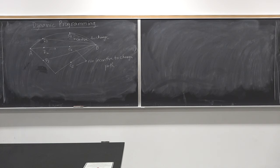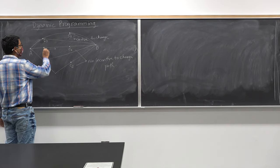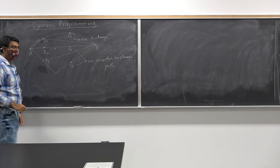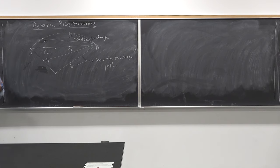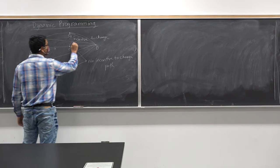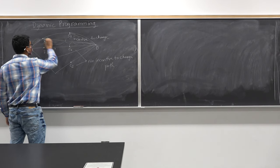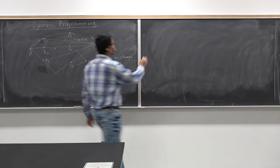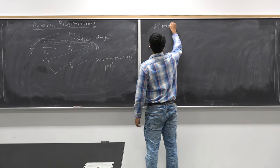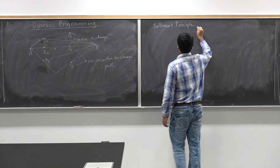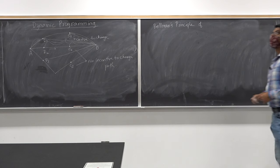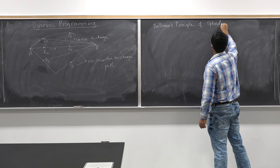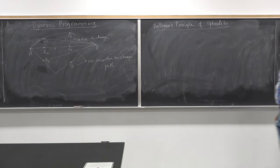What does that tell us about the optimal path from A to B? It tells us the following fact: no matter where I stand and I do the optimization for the rest of the time horizon, I shouldn't have any incentive to change my course of action. This particular fact about optimal strategy is known as Bellman's principle of optimality.